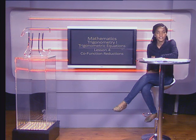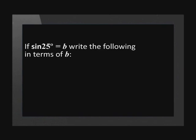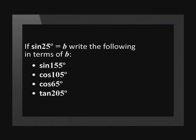Let's try a slightly different example. This next question is popular in exams. If sine(25°) is equal to b, write the following in terms of b. There are four parts to this question. To solve each part, we will first have to write the ratio in terms of sine(25°), and then we will change it to b.